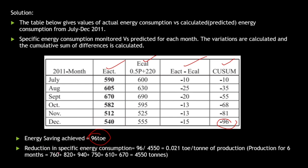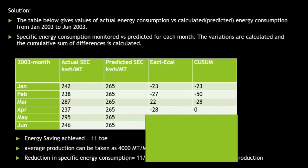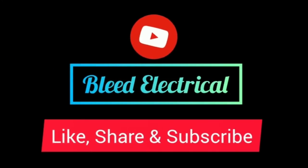The reduction in specific energy consumption is 96 divided by 4550, where 4550 is the total production over the six months. This is how you calculate QSUM. There is another example which I leave as an assignment — you can try it out and if you do not follow, comment below and I will provide the solution. In the upcoming videos, I will be talking about SCADA systems. Thank you.